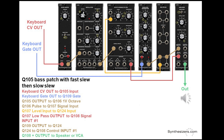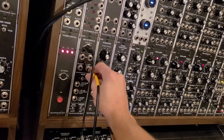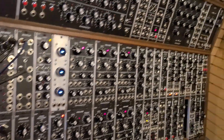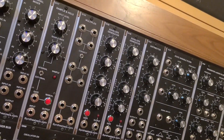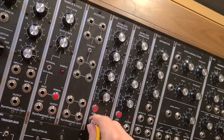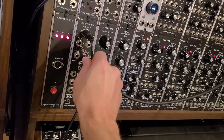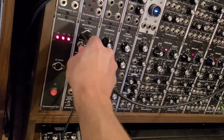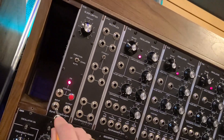Today's patch features the Q105 slew limiter. Start by patching the keyboard gate output to the Q109 envelope generator. Then, patch the keyboard pitch to the Q105 slew limiter input.